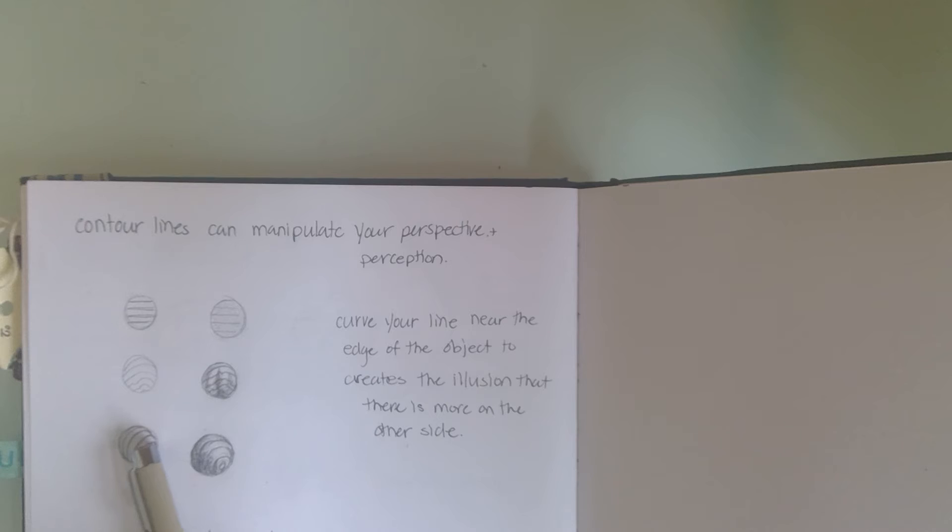Curve your line near the edge of the object to create the illusion that there is more on the other side. You see here I'm curving it very close, going right along the edge, and that creates the illusion that it goes all the way around - that there's more on the other side.